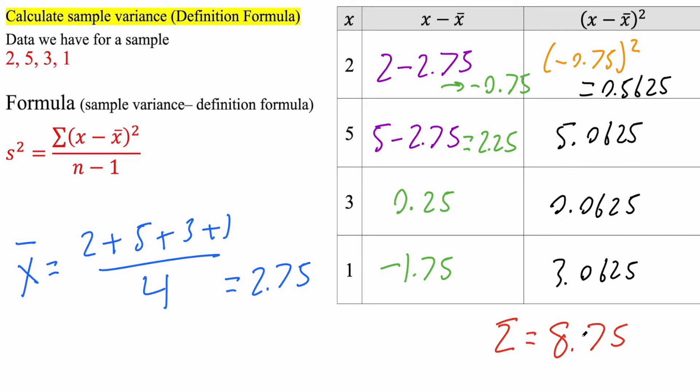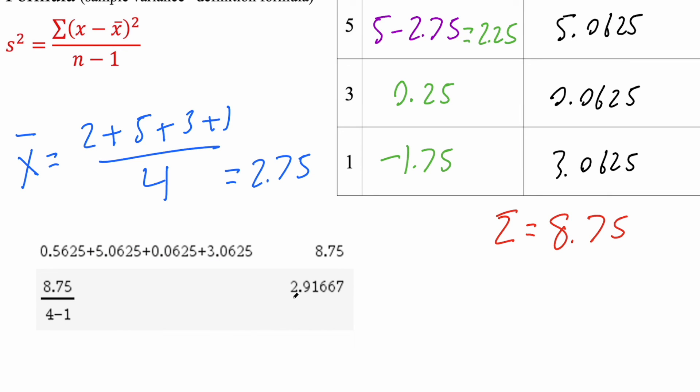So finally, what we're going to do is take 8.75 divided by n minus 1. We have 1, 2, 3, 4, we have four numbers. So four minus 1, which is three. And we type this on a calculator, we get 2.917. And that's pretty much it for this video.